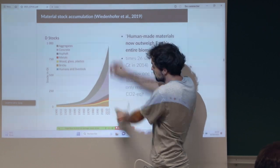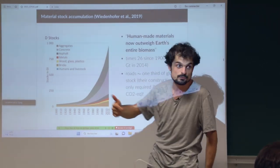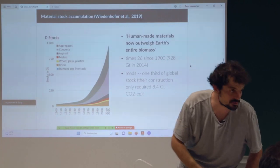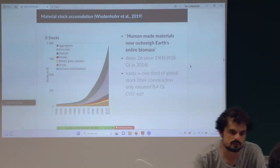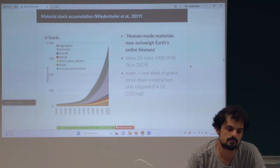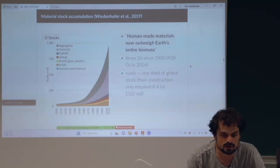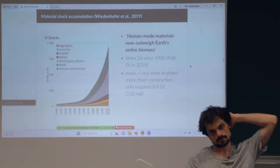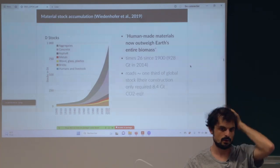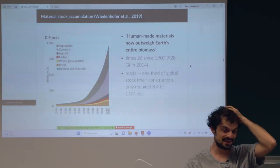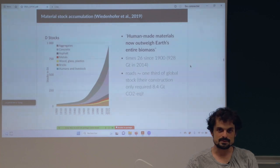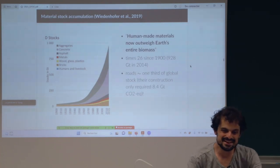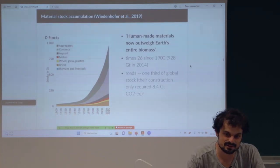The rest of the stock is bricks, wood, glass, plastics, and so forth. The total is about 1,000 billion tons. There is a recent paper showing that human-made materials now outweigh the earth's entire biomass — there is more building material than plants on the world. This is quite depressing.